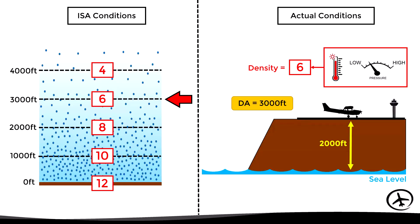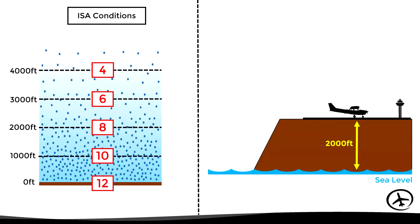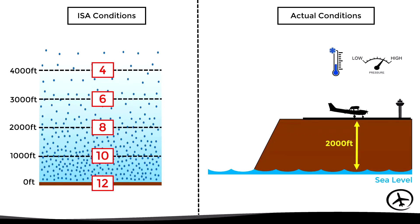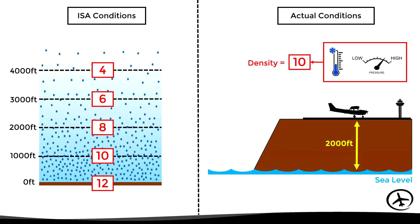The opposite happens with higher than standard pressure and lower than standard temperature. The combination of these factors increases air density — suppose it results in a density of 10. Looking for this in the ISA model, we find it at 1,000 feet. Therefore the airport has a density altitude of 1,000 feet, although its actual elevation is 2,000 feet, meaning aircraft performance will behave as if flying at 1,000 feet due to the increased air density.